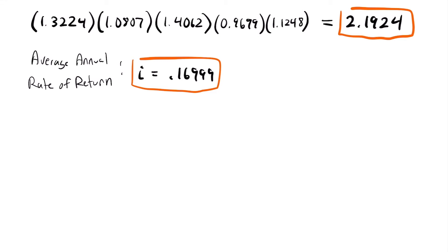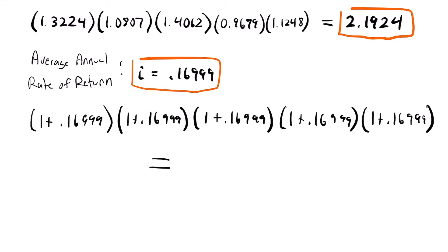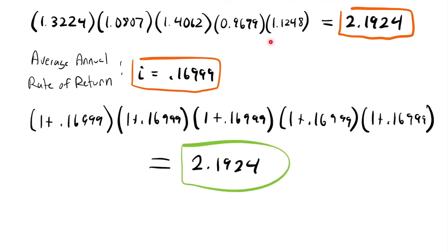To confirm this concept, the average annual rate of return should give us the same final multiplier as using all the different individual rates. So if we take 1 plus 0.16999 and multiply that by itself five times, we get the same 2.1924. I encourage you to plug this into your calculator as well. This confirms that when we set the product equal to (1 + i)^5, we did find the correct average rate — the rate that, if constant for five years, gives the same result as those varying rates.